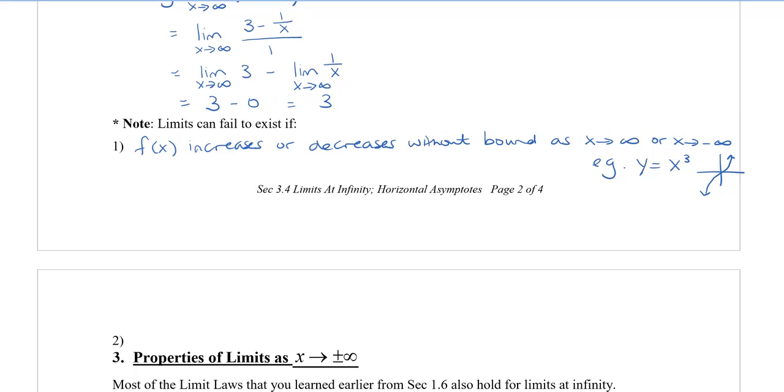The second way that the limit can fail is if the graph of f of x oscillates indefinitely. An example of this would be f of x equal to sine x. We can see from the graph this goes up and down, and it doesn't ever stop, so therefore there is no limit. Remember the limit is a y value, and because sine x is oscillating, we don't actually have a limit here.